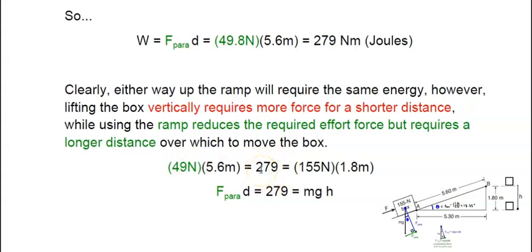And one more time, you can see the left side of this equation is 49 Newtons times 5.6 meters - this is going up the ramp - that gives you 279 joules. But this is 155 Newtons times the vertical 1.8 meters, that's going straight up the side. Either way you're going to get there and either way you're going to spend 279 joules. However, if you use the ramp you only use 49.8 Newtons, but if you lift it straight up, as I said earlier, it's a weightlifting contest and you got to lift the full weight 155 Newtons straight up 1.8 meters. Either way you're spending 279 joules of energy.